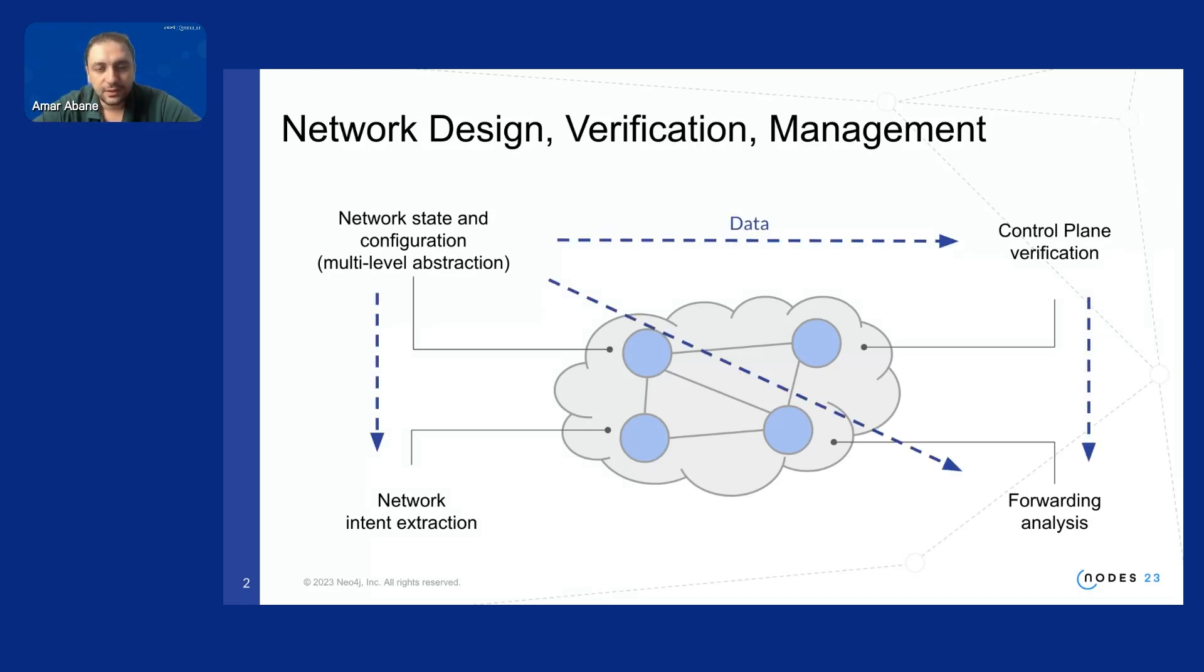The first thing we see here in terms of data is that these tools are related together in terms of the data they consume from each other so control plane verification tools usually need to have the data from network configuration transferred to the tool and forwarding analysis also consumes data from the network state especially routes.